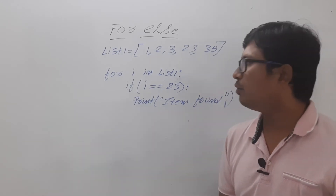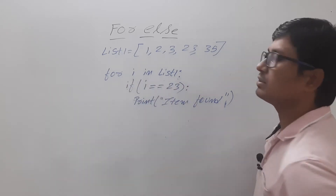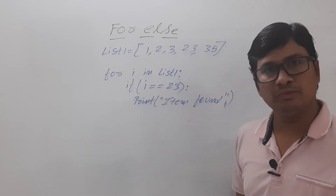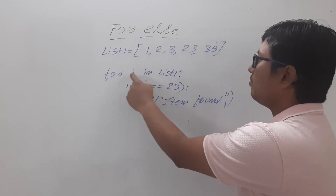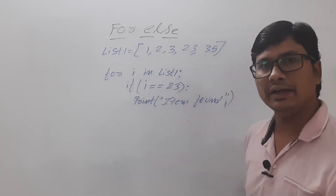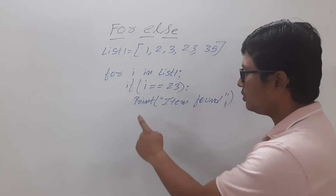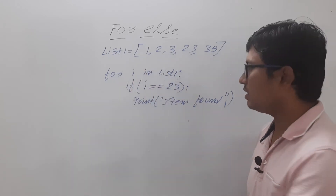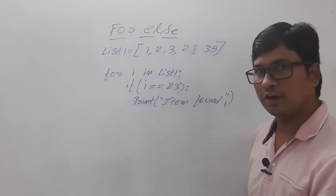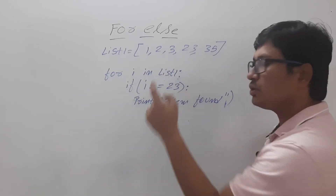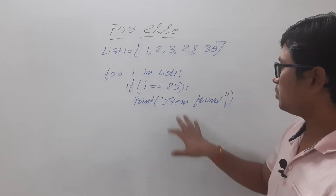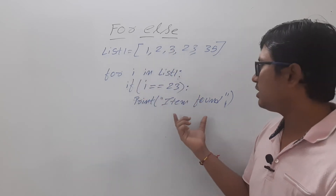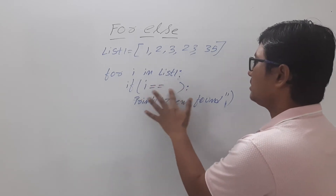So for i in list1, initially i is 1. Is 1 == 23? No, so the if block won't execute. Then i is 2 — 2 == 23? No. Then i is 3 — 3 == 23? No. Then i is 23 — 23 == 23? Yes, the condition is true, so we get the output 'item found'. Whenever the element is there, this will give output.